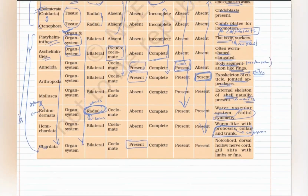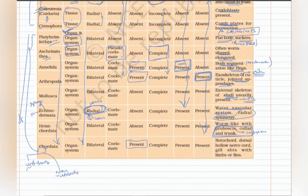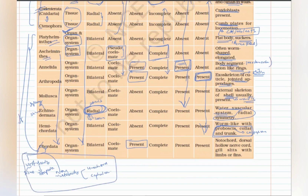In Chordata, we have vertebrates and non-vertebrates. Vertebrates include Pisces and Tetrapoda, discussed in the last video. Non-vertebrates include two subphyla: Urochordata and Cephalochordata. This classification is very important and you should always revise it before any exam. The special feature of chordates is the notochord, which is a mesodermally derived structure around which the nervous system develops. The hollow nerve cord is dorsal and the heart is ventral.